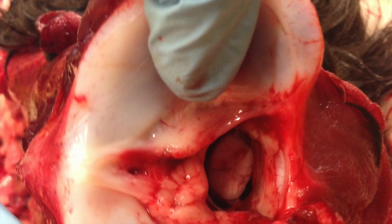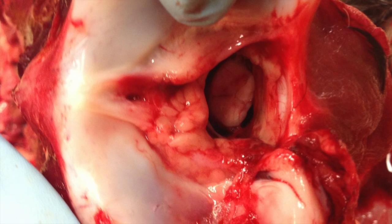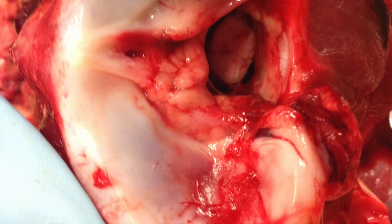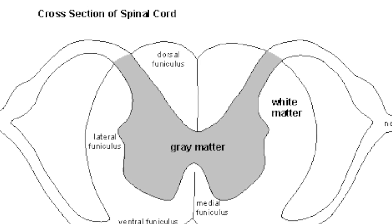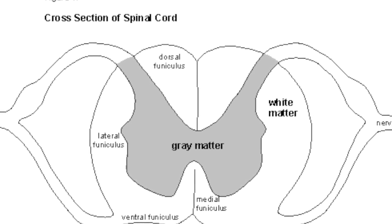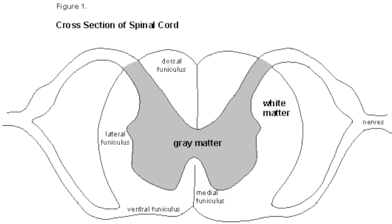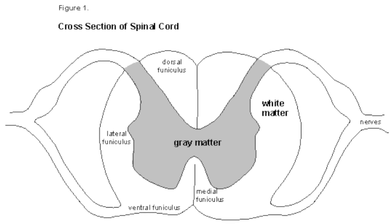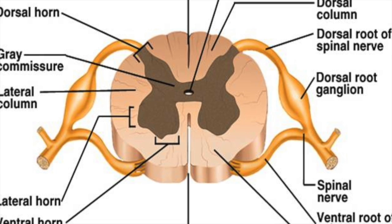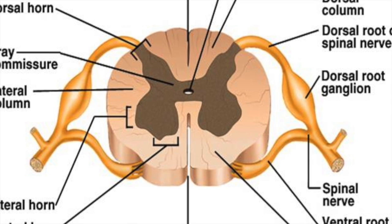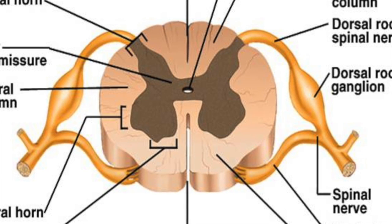The next part of the central nervous system is the spinal cord. We have the central canal, which is an extension of the ventricles from the brain that contains cerebrospinal fluid. We have the dorsal, lateral, and ventral funiculi, which are the white matter of the spinal cord. The dorsal funiculus is the sensory tract, the ventral funiculus is the motor tract, and the lateral funiculus is both sensory and motor. The gray matter section is butterfly-shaped, known as the dorsal and ventral horns. The dorsal horn contains neurons that process sensory signals and the ventral horn contains neurons that process motor signals.